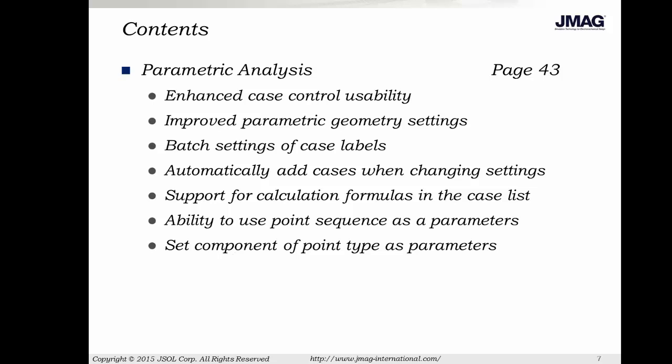If you're working with parametric models, you will find improvements in the case control settings, including a batch label setting function. You can also more easily set parametric geometry values. If you are changing a value in a parametric study, JMAG will automatically add a case instead of just duplicating the study or deleting those results. The case settings now support formulas and the use of point sequences as parameters. Lastly, you can set a physical point as a parameter.